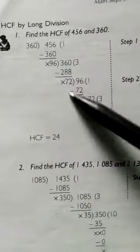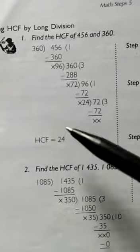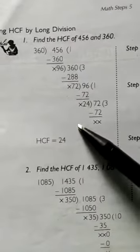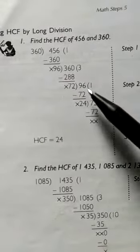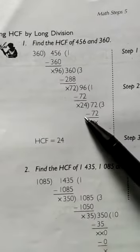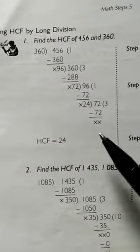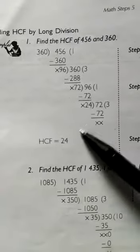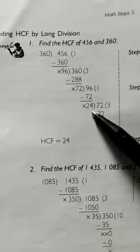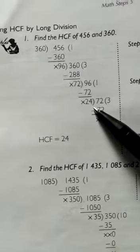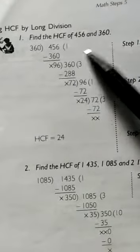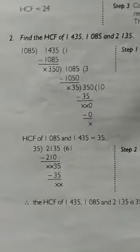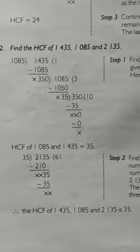In Step 3, continue Step 2 until there is no remainder. We continue this process until no remainder remains. The last divisor is the HCF. Our last divisor is 24, so 24 is the HCF of 456 and 360.